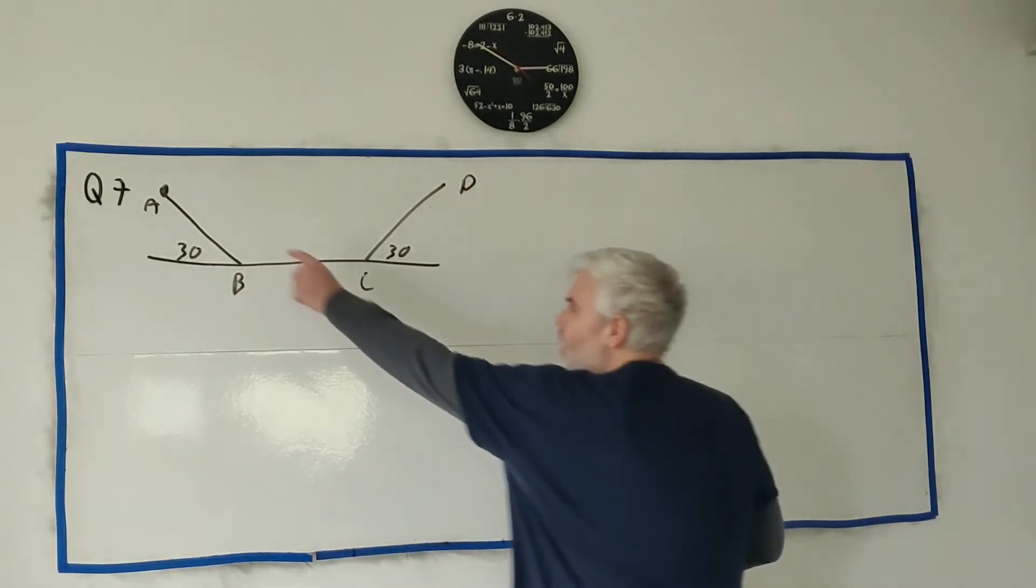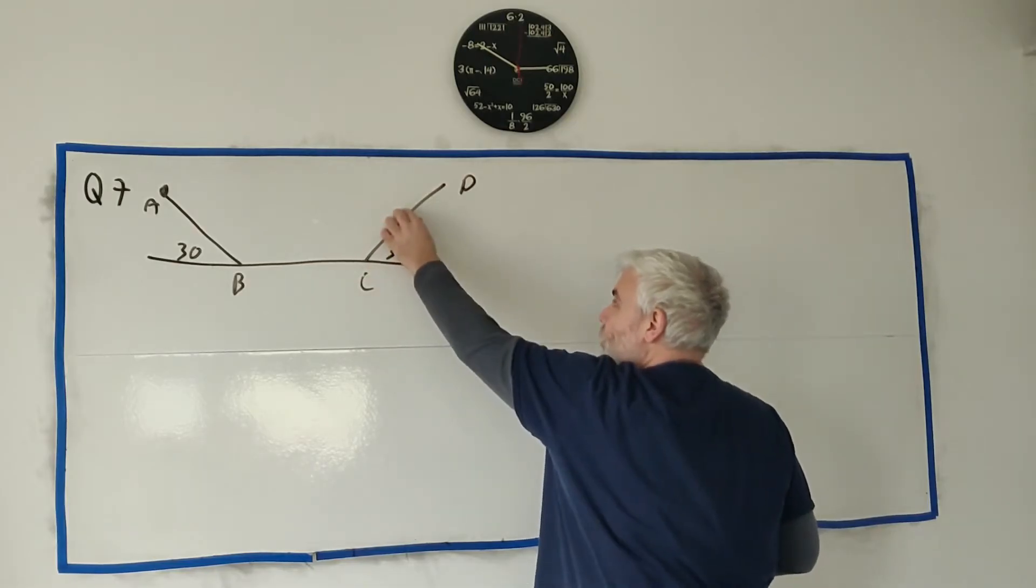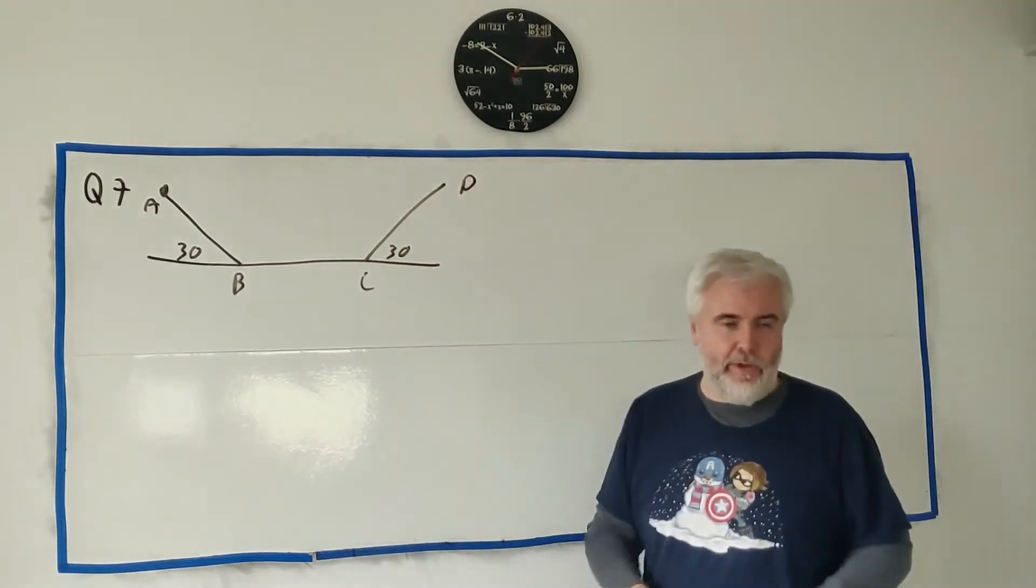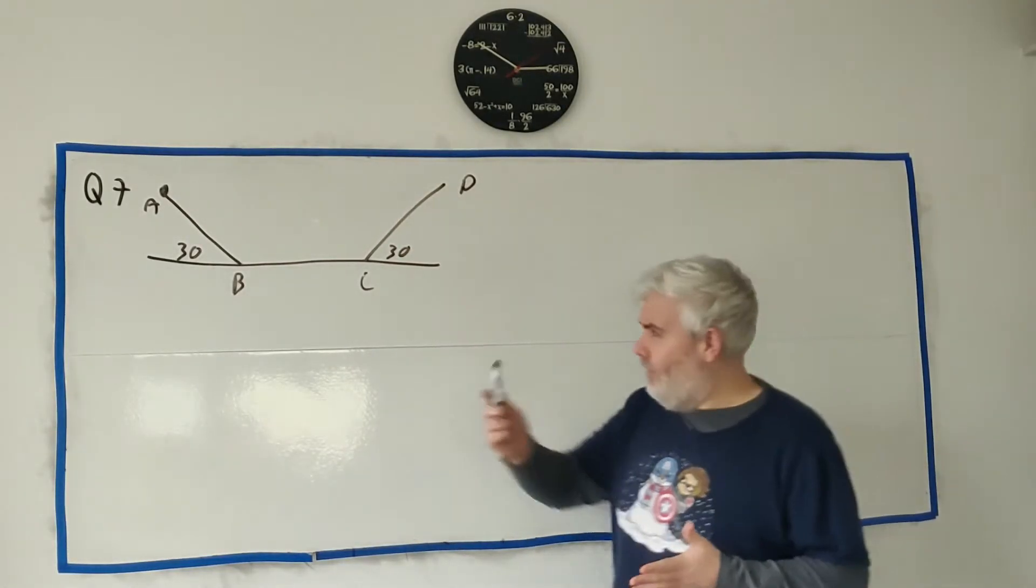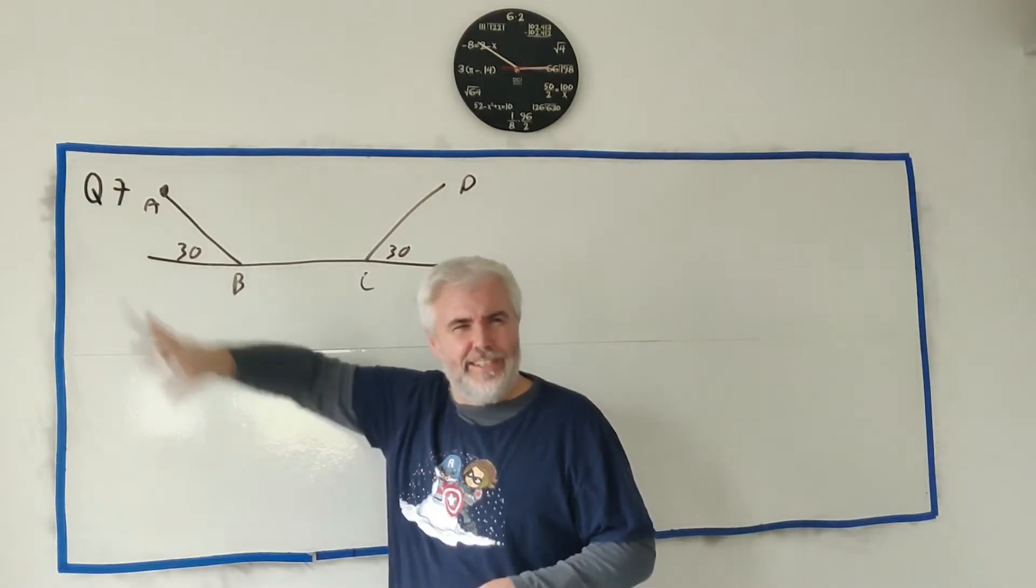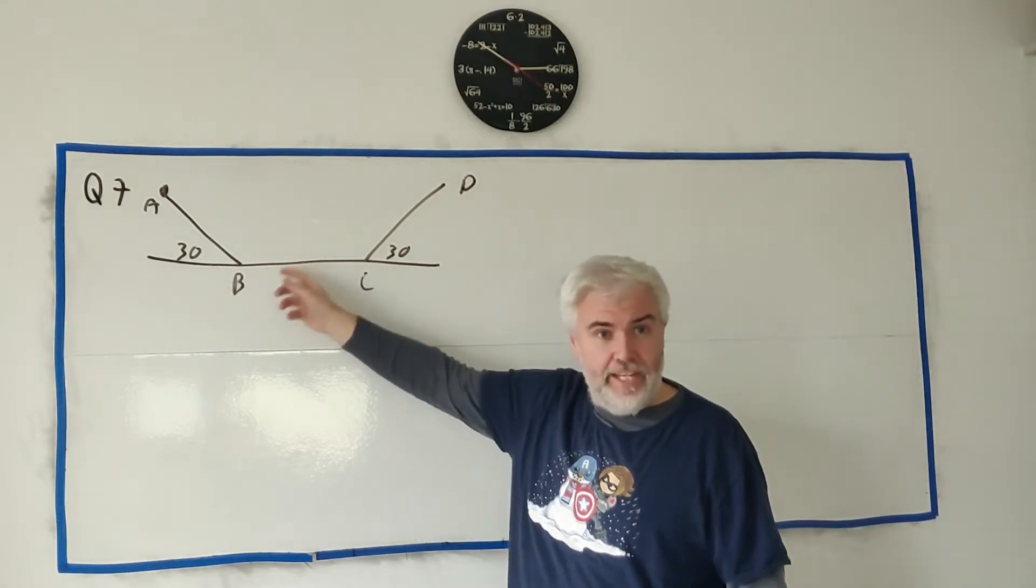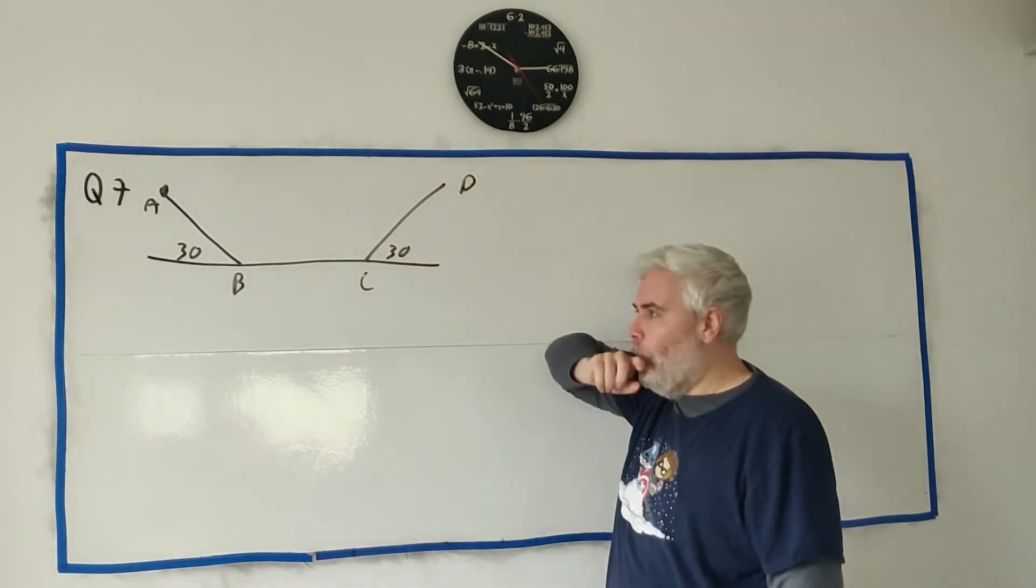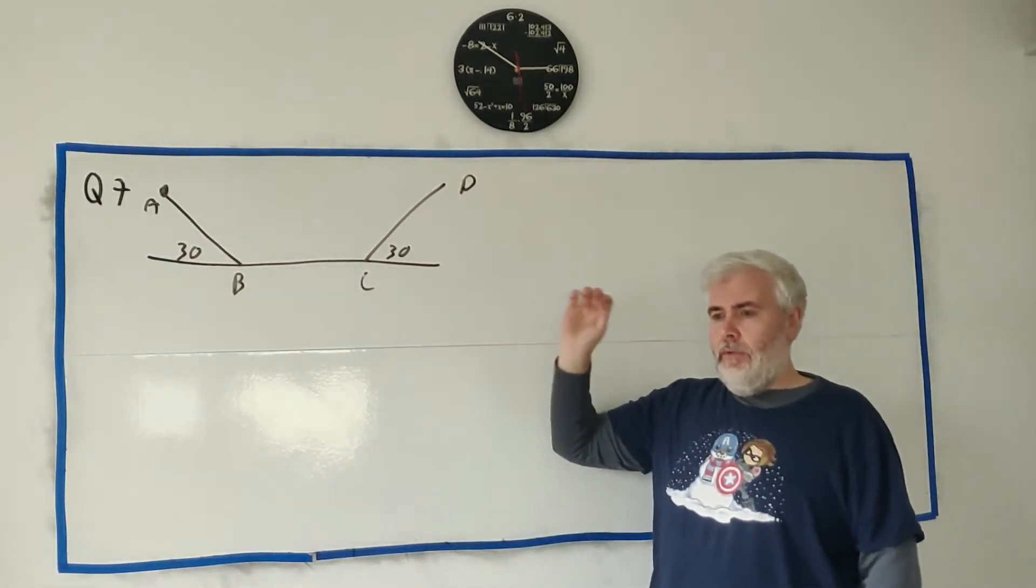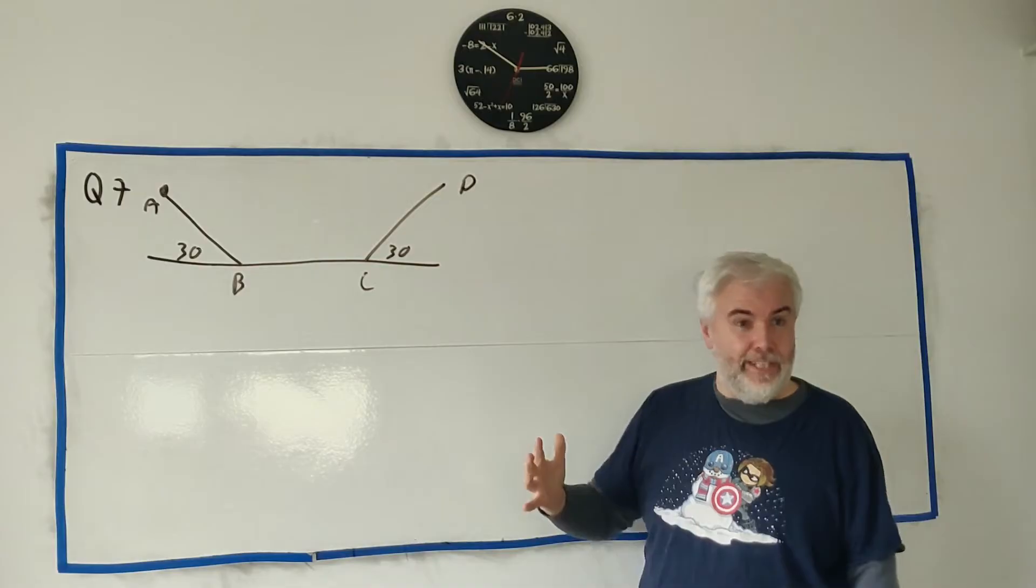Part A asks us how far up this hill do we get when the speed is 1. You can use energy actually - we have a height, angle, and length. We'd have to work out how much work is done by friction. But I won't do it that way, because I think most students end up using forces more. So let's do it that way.